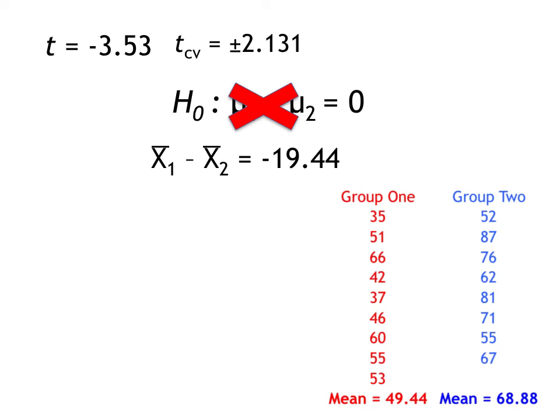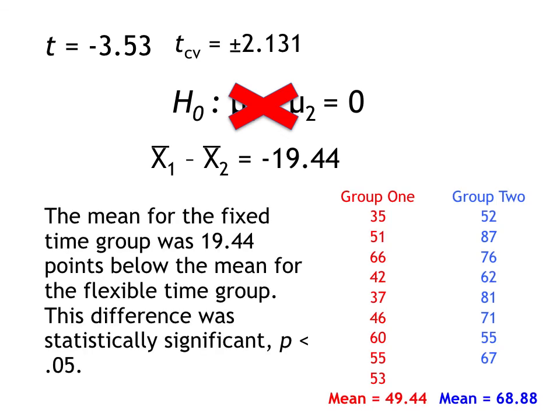Then we have to interpret that result. The mean for the fixed time group, group 1, was 19.44 points below the mean for the flexible time group, group 2. This difference was statistically significant, p less than 0.05.